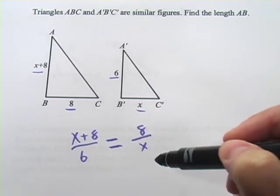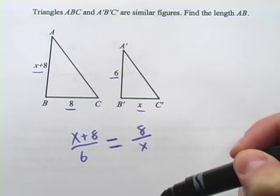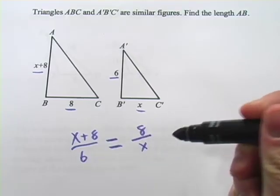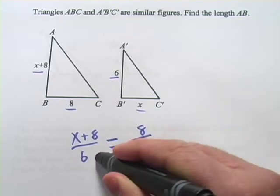So it's the same way we've done proportions in the past. It's just that we've got some variables in there now, more variables than we're used to. But we can still do the same thing. We can cross multiply.